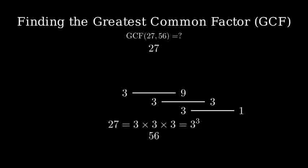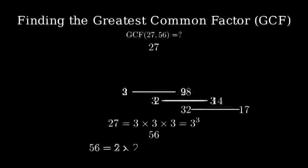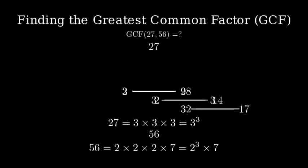Now, let's find the prime factorization of fifty-six. Fifty-six divided by two is twenty-eight. Twenty-eight divided by two is fourteen. Fourteen divided by two is seven. And seven is already prime. So fifty-six equals two cubed times seven.